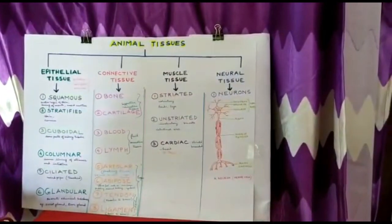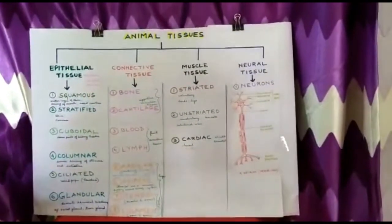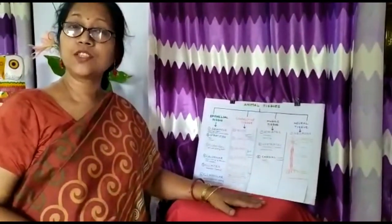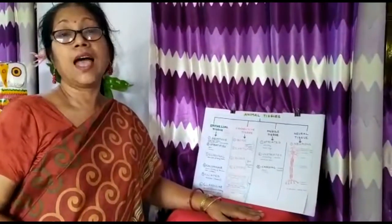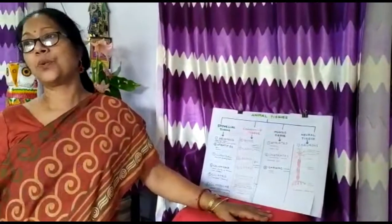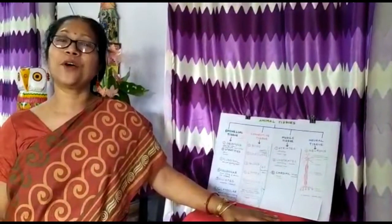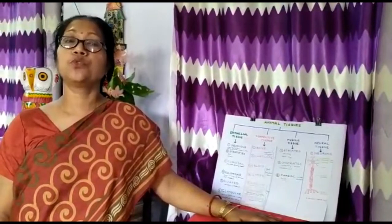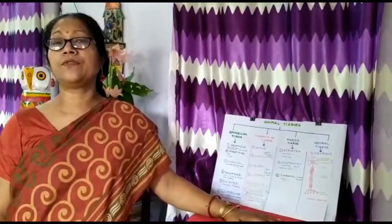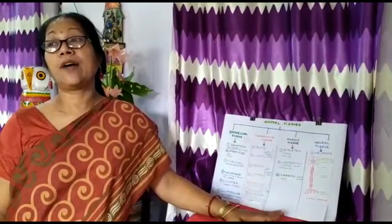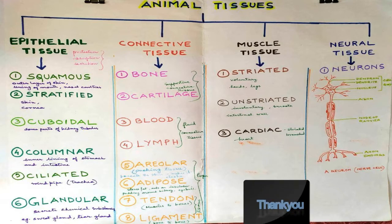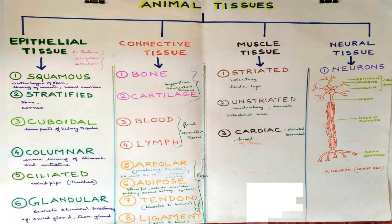So these are the animal tissues. You are going to watch the video two or three times and learn it. You have to read the chapter again and again, then do the question answers — those are needed for practice. I am going to discuss the question answers as I have done in the previous chapter. Whenever you study biology, keep one notebook for practicing diagrams — diagrams are very important. Till this much, bye!